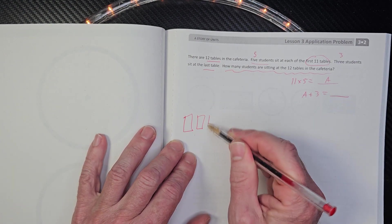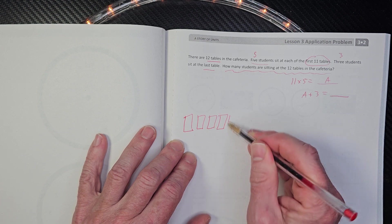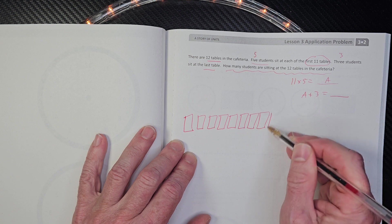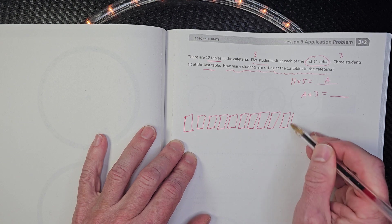Here's one, two, three, four, five, six, seven, eight, nine, 10, 11.